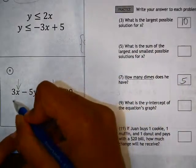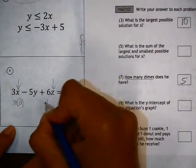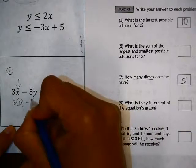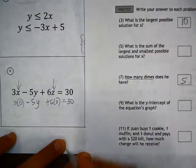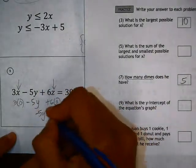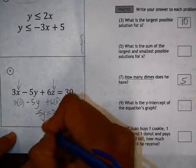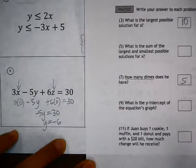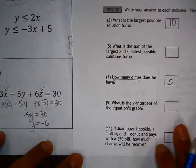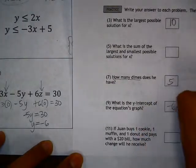So if we plug 0 in for x and for z, we can calculate what the y-intercept would be. Here we have negative 5y equals 30, which means that y equals negative 6. So the y-intercept of the equation's graph would be at negative 6.